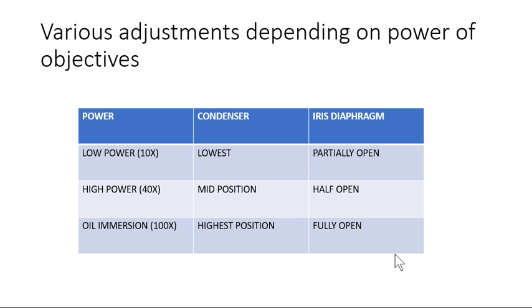Let's recap. With low power, the condenser should be at lowest position and iris diaphragm partially open. With high power, condenser at mid position and iris diaphragm half open. For oil immersion, condenser at highest position and iris diaphragm fully open—this is maximum illumination.